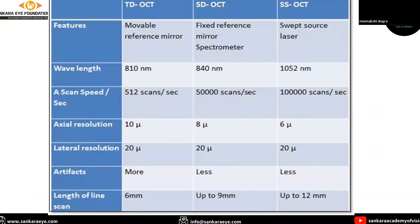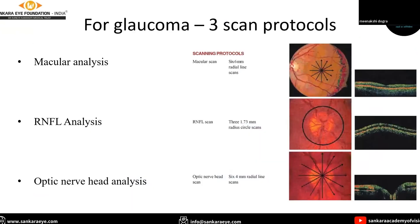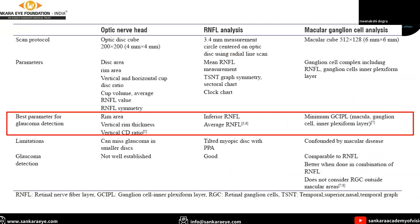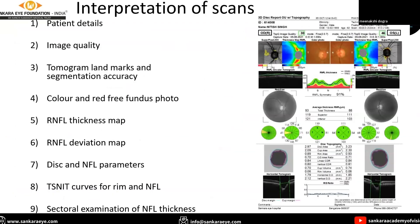Swept-source OCT has an A-scan speed of 100,000 scans per second, giving an axial resolution of 6 microns. For glaucoma, three scan protocols are used: macular analysis, RNFL analysis, and optic nerve head analysis. The important best parameters for glaucoma detection in optic nerve head analysis are rim area, vertical rim thickness, and vertical CD ratio. In RNFL analysis, it is inferior and average RNFL, and in macular ganglion cell analysis, it is minimal GCL thickness. It is very tempting when looking at the OCT printout to focus on the colored images, but we should take into consideration all the parameters to come to a diagnosis.